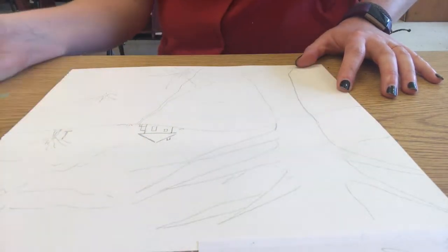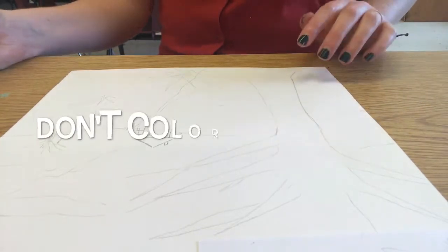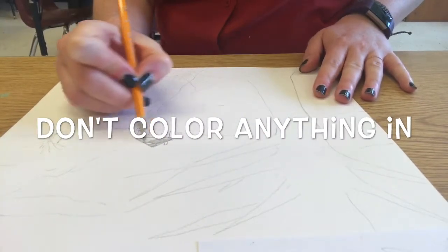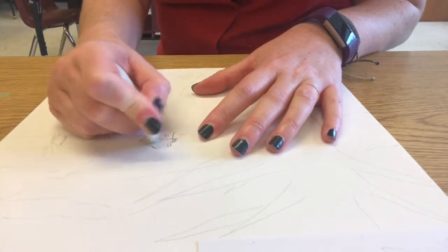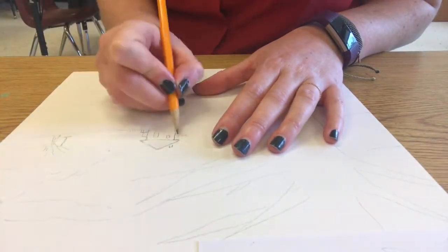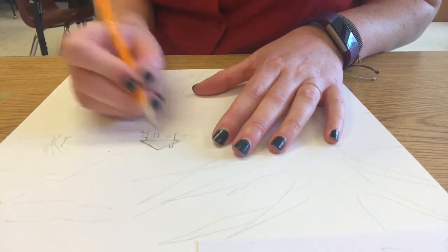While you're drawing make sure that you don't color anything in with your pencil. All the color and value is going to be done with watercolor so we just want to do a line drawing. If you accidentally do that's okay. Just erase it and redraw it using only pencil lines.